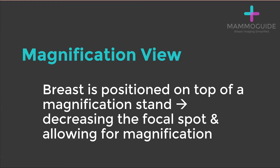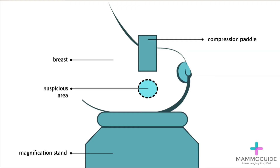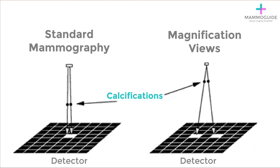In a magnification view, the breast is positioned on top of a magnification stand, not directly on top of the detector plate. This decreases the focal spot and allows for magnification. Here you can see that the breast is elevated and then compression is applied. The abnormality, often calcifications, are positioned closer to the x-ray source and further away from the detector.